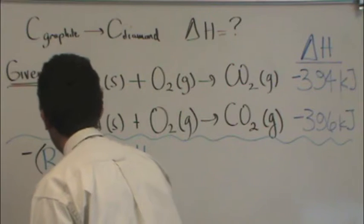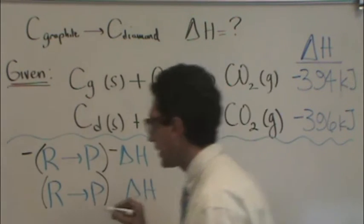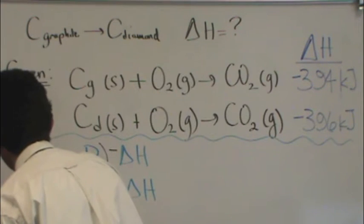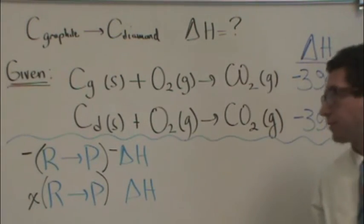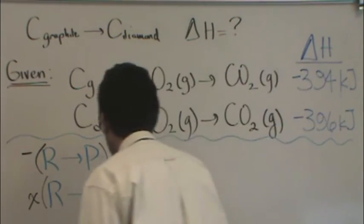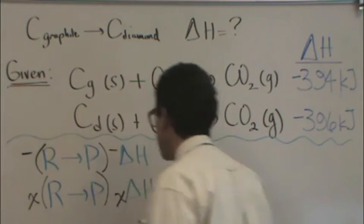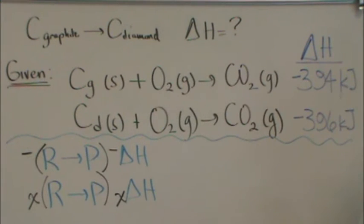Likewise, let's say you need to take this reaction. We'll take a second example. And I need to multiply it by, say, X, some number, 1, 2, 3, whatever. And that means that I'm going to multiply the delta H by X. So as long as you got that down, you should be good to go. These are how you multiply the delta H.